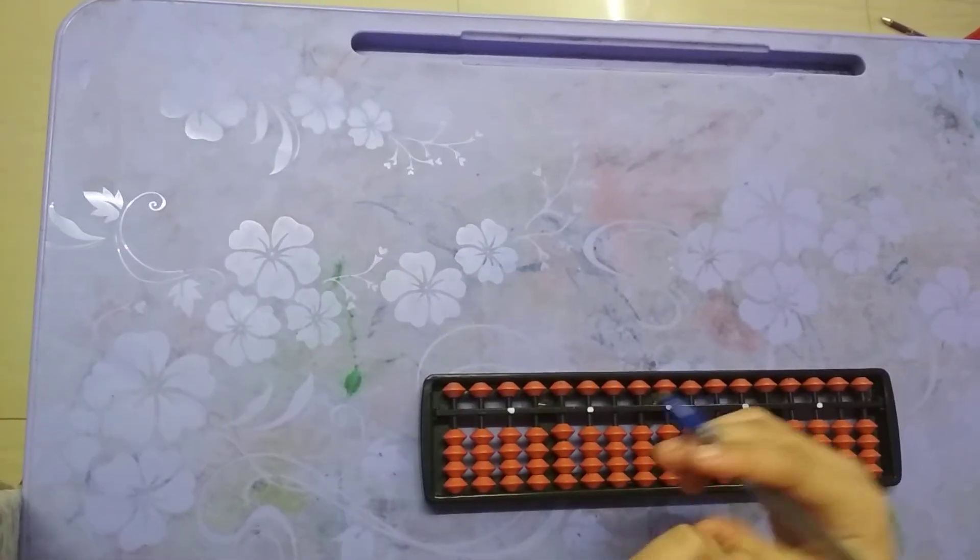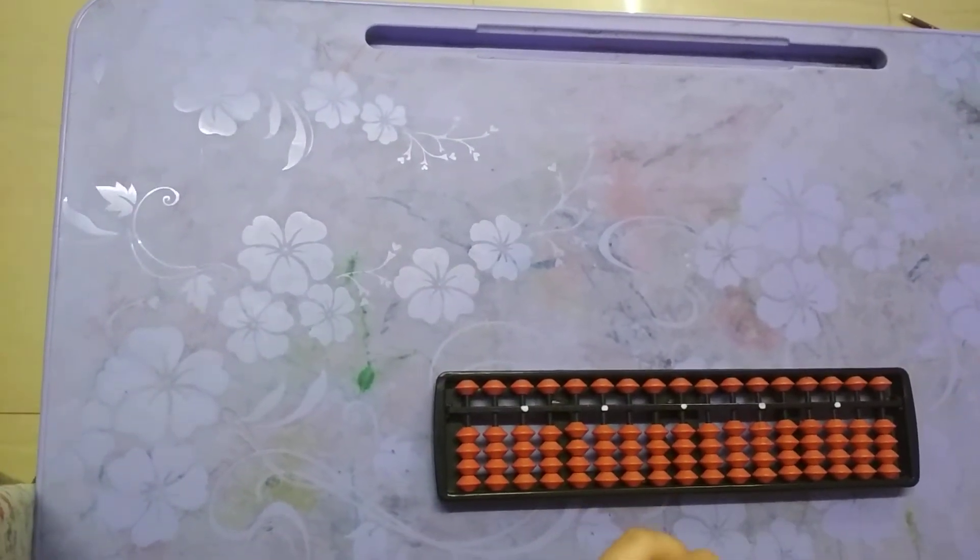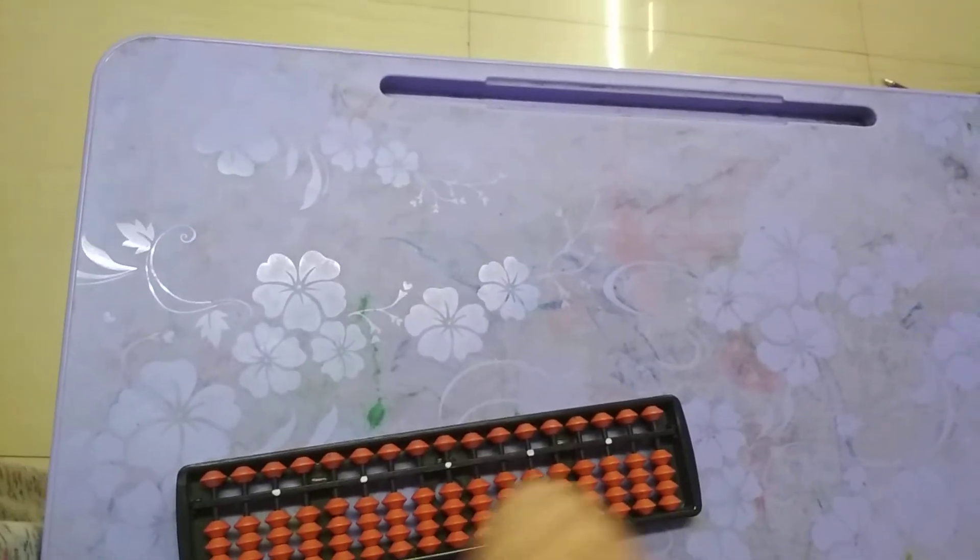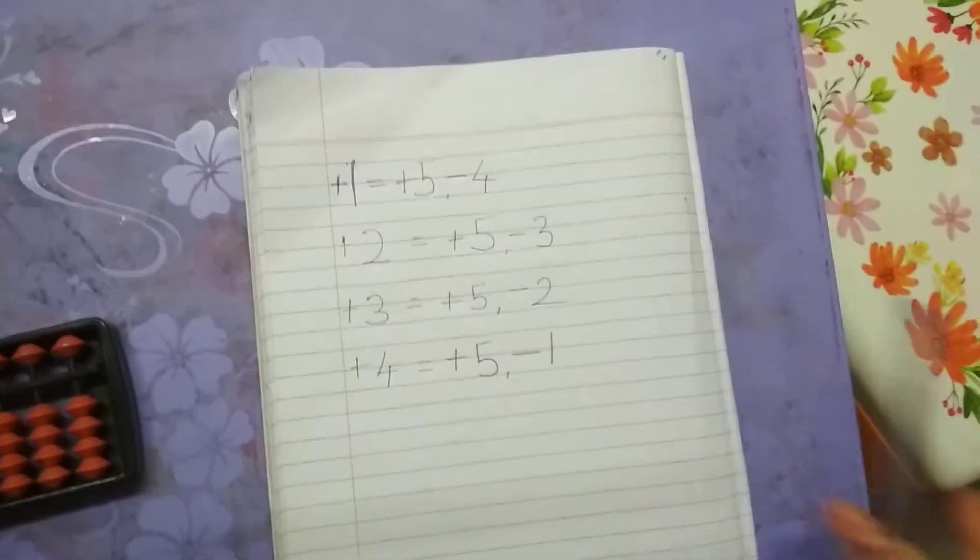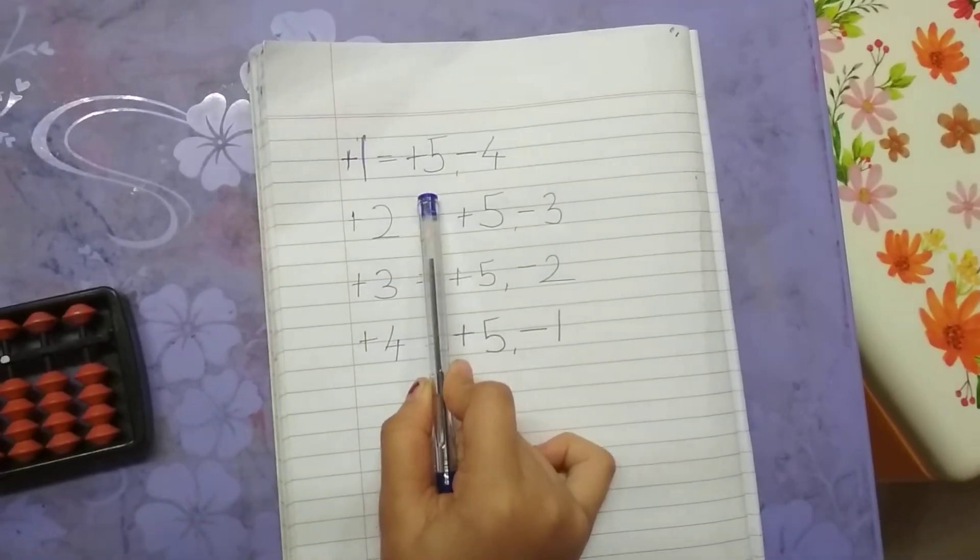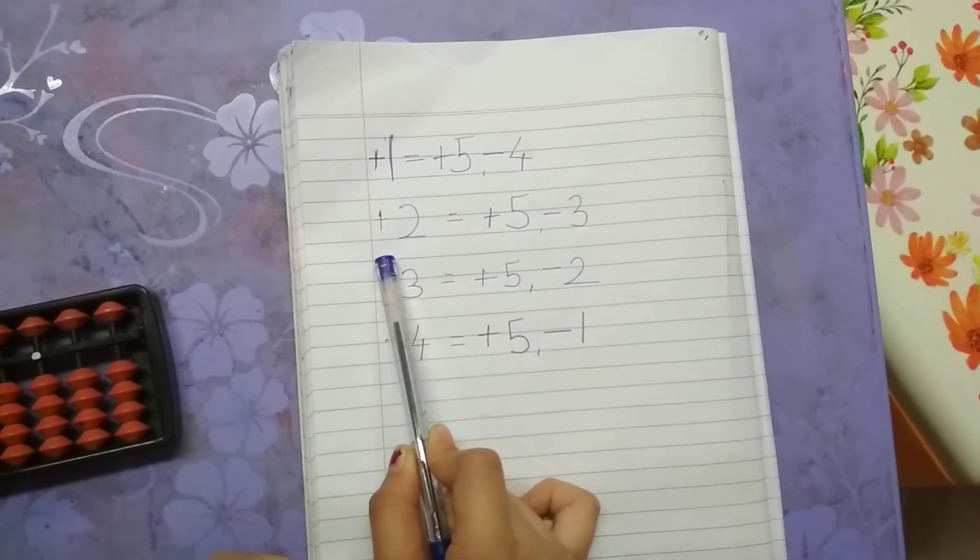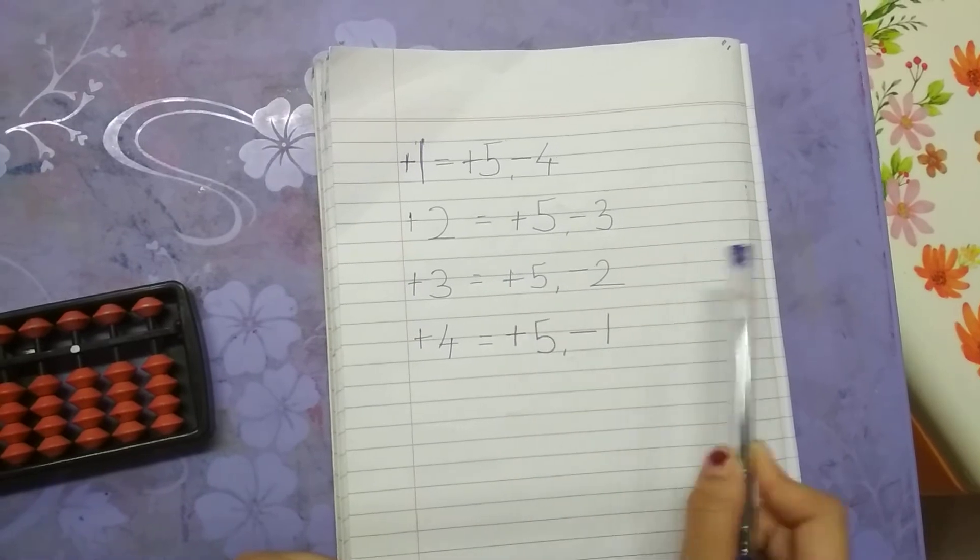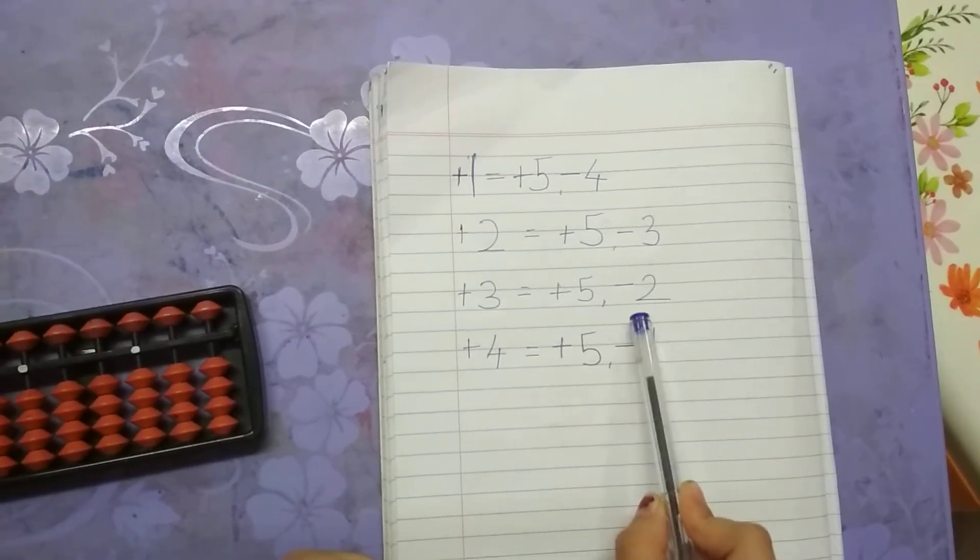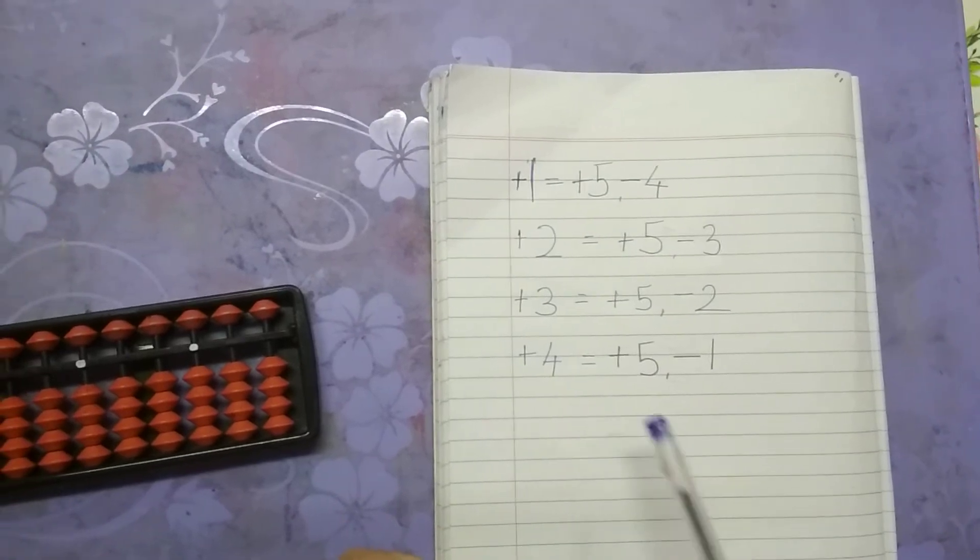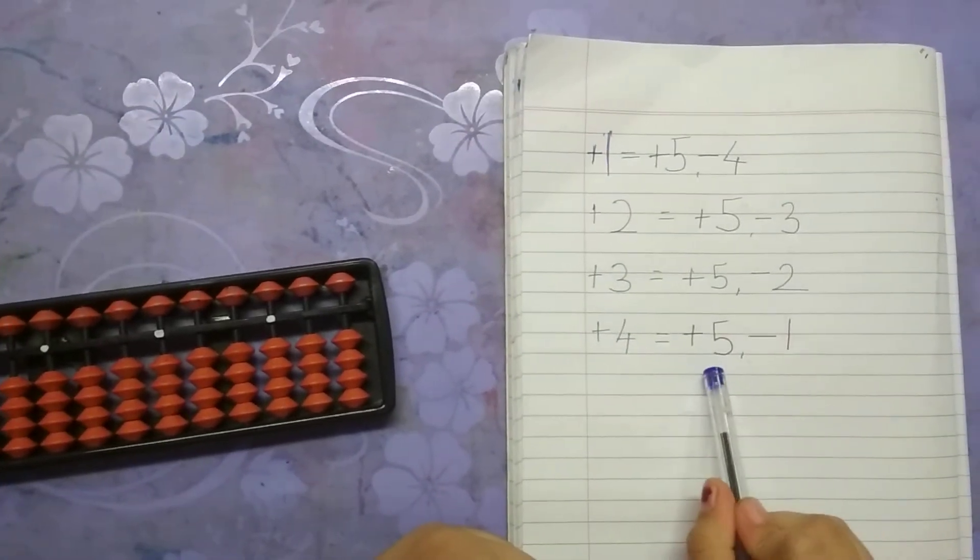Let's learn the small friends formula. Before anything, note down this: plus 1 equals plus 5 minus 4, plus 2 equals plus 5 minus 3, plus 3 equals plus 5 minus 2, plus 4 equals plus 5 minus 1.